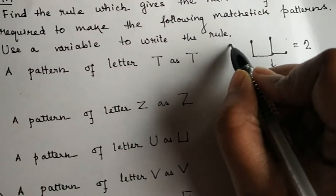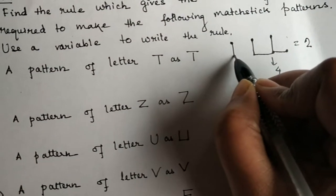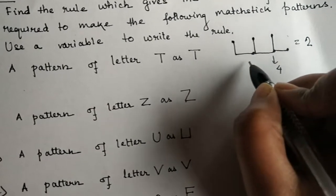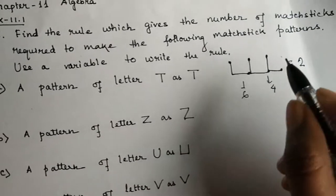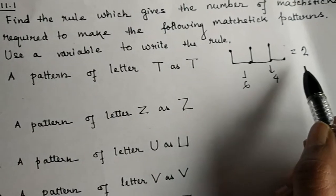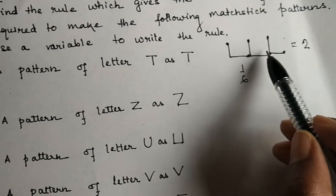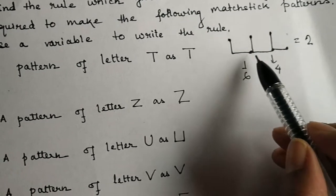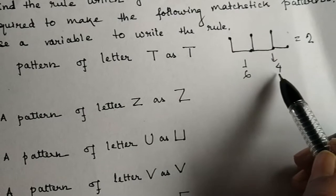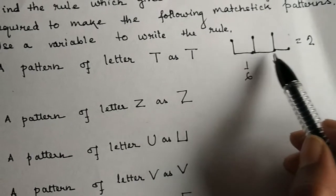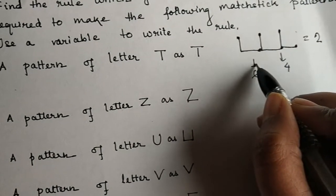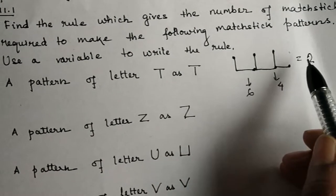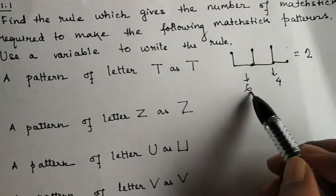If I take one more L, then it will be 6. So here, one pattern is formed. At first, when I have taken 1 L, mastics used are 2. When I have taken 2 L's, mastics used are 4. When I have taken 3 L's, mastics used are 6. So here, every time it is increasing by 2.